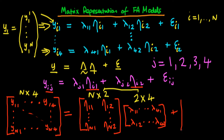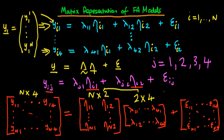Finally, we have a matrix of disturbance terms, which has the same dimensions as our dependent variable — n by 4 — for the system to make sense. The first row is epsilon_11 through epsilon_14, each individual row corresponding to the disturbances for one individual, and the last row is epsilon_n1 through epsilon_n4. Essentially, we have included the information that we're dealing with n individuals, which has allowed us to write our system as a single matrix equation.